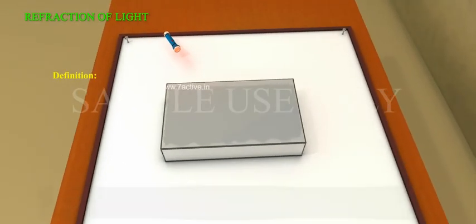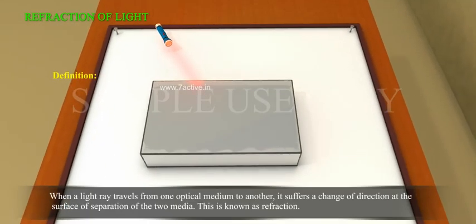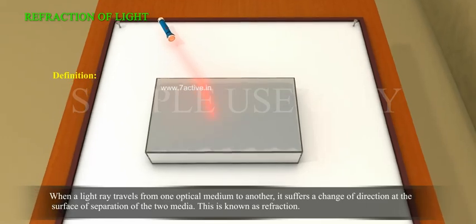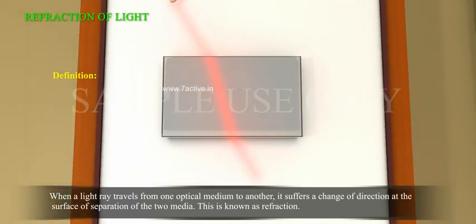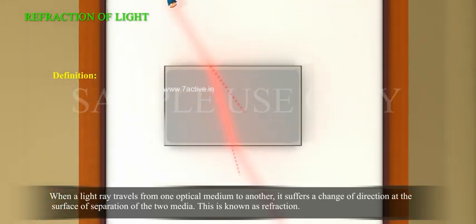Definition: When a light ray travels from one optical medium to another, it suffers a change of direction at the surface of separation of the two media. This is known as refraction.